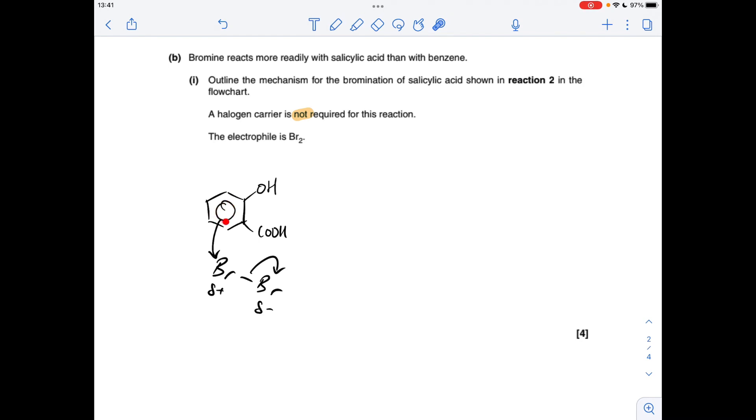They come from the delocalised ring of pi electrons in the benzene ring of salicylic acid. So we need to draw a pair of electrons from the ring to the slightly positive bromine atom of the BR2 molecule. That's going to break this bond here by heterolytic fission, which gives us this intermediate here and a bromide ion.